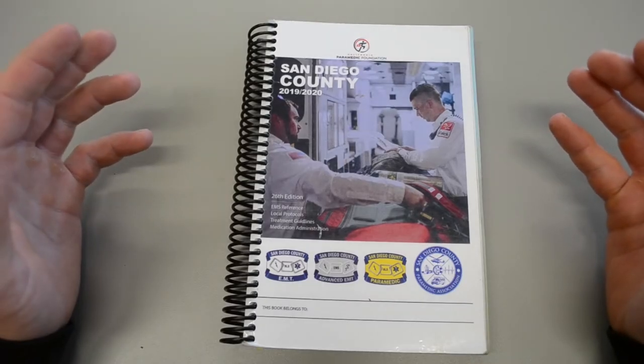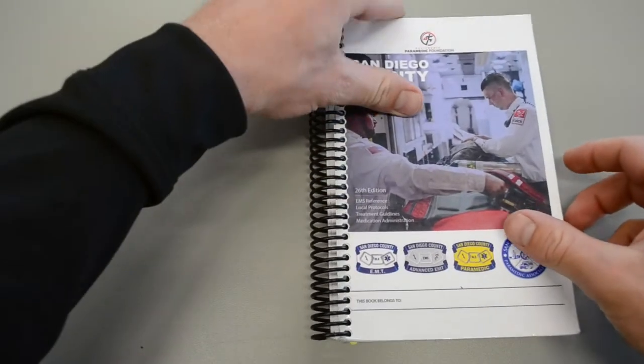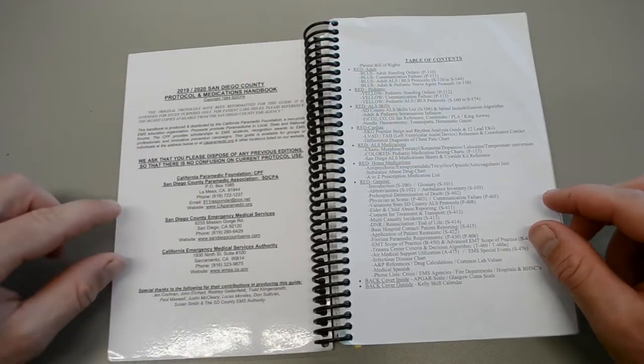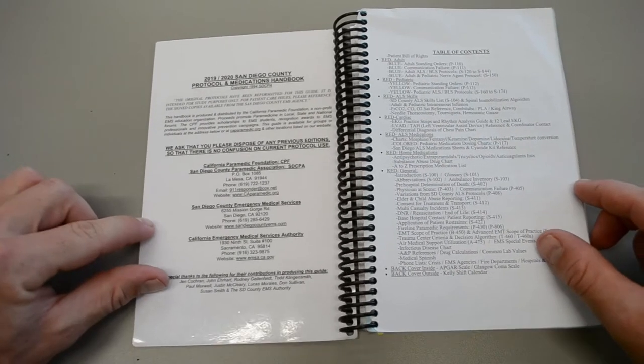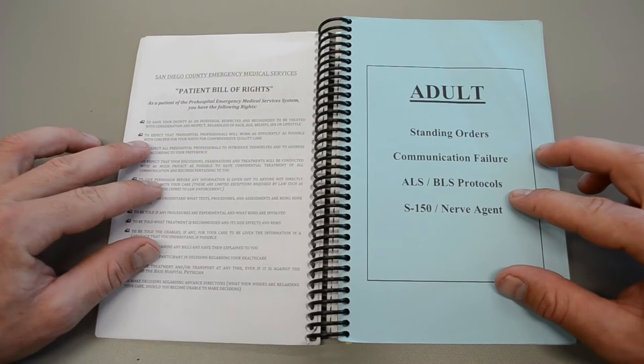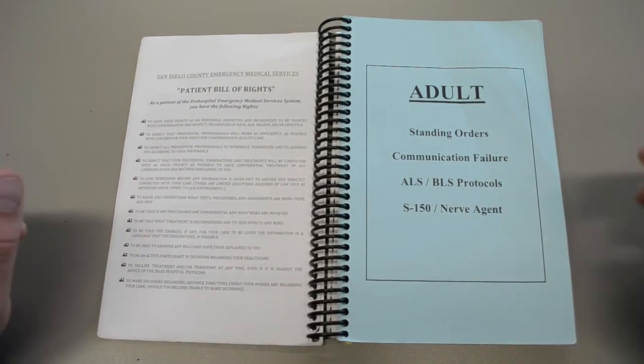This video is intended to give you an overview of the San Diego County EMS protocol book. Opening it up on the first page we see some information about the handbook itself and the table of contents, Patient Bill of Rights. Very important to understand what's written in here, but again this is just an overview so we'll keep going.